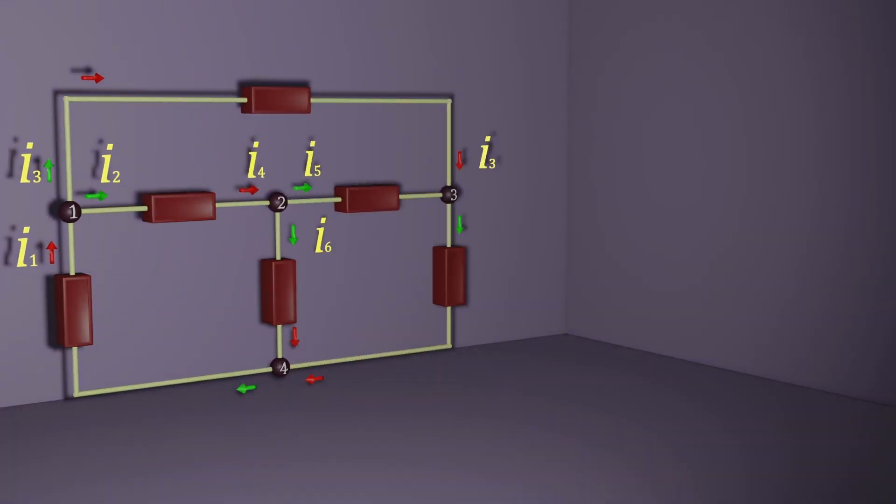This network illustrates Kirchhoff's current law. This network has four nodes. At node 1, KCL can be written as i1 is equal to i2 plus i3.